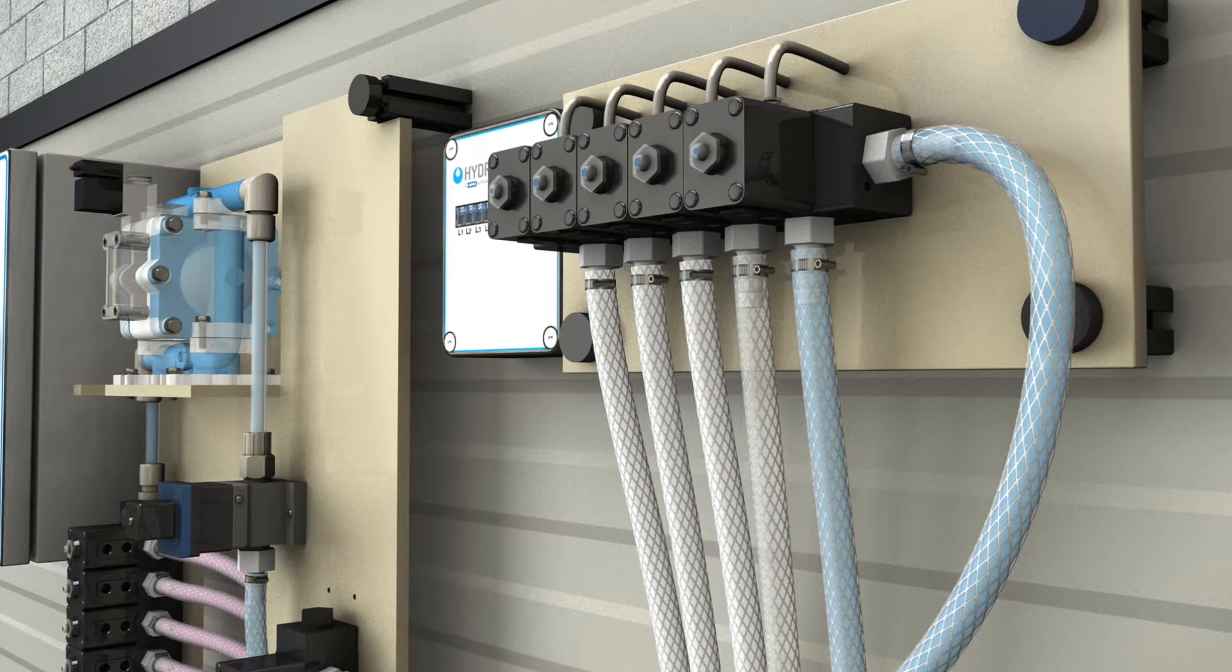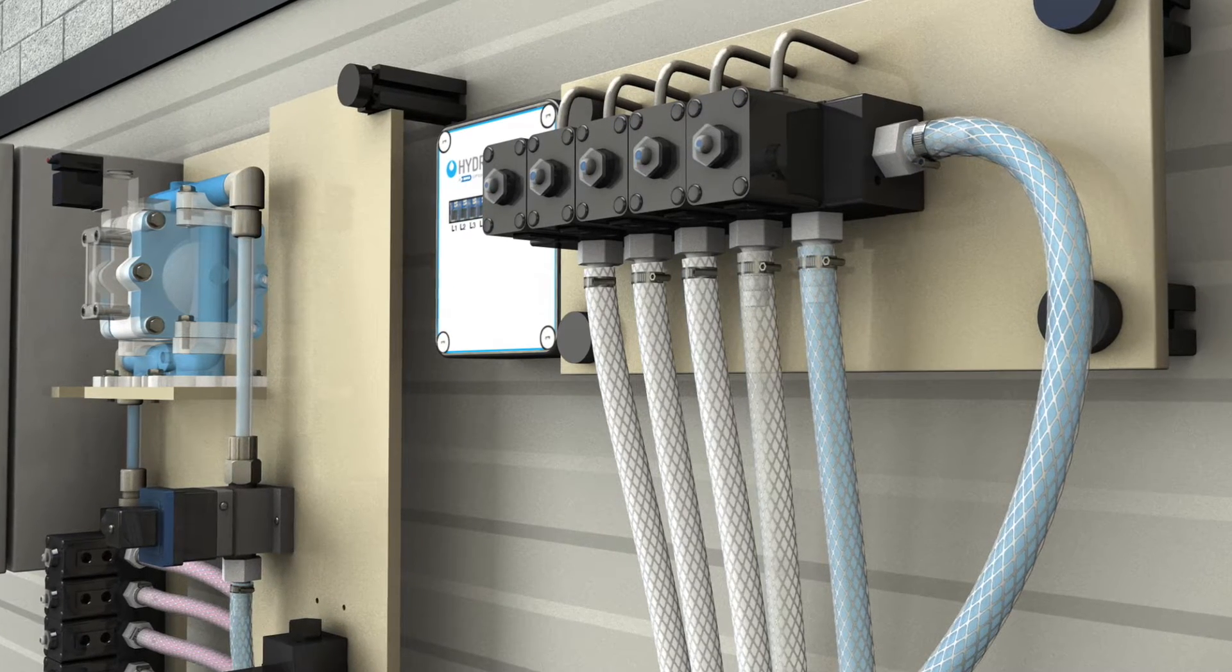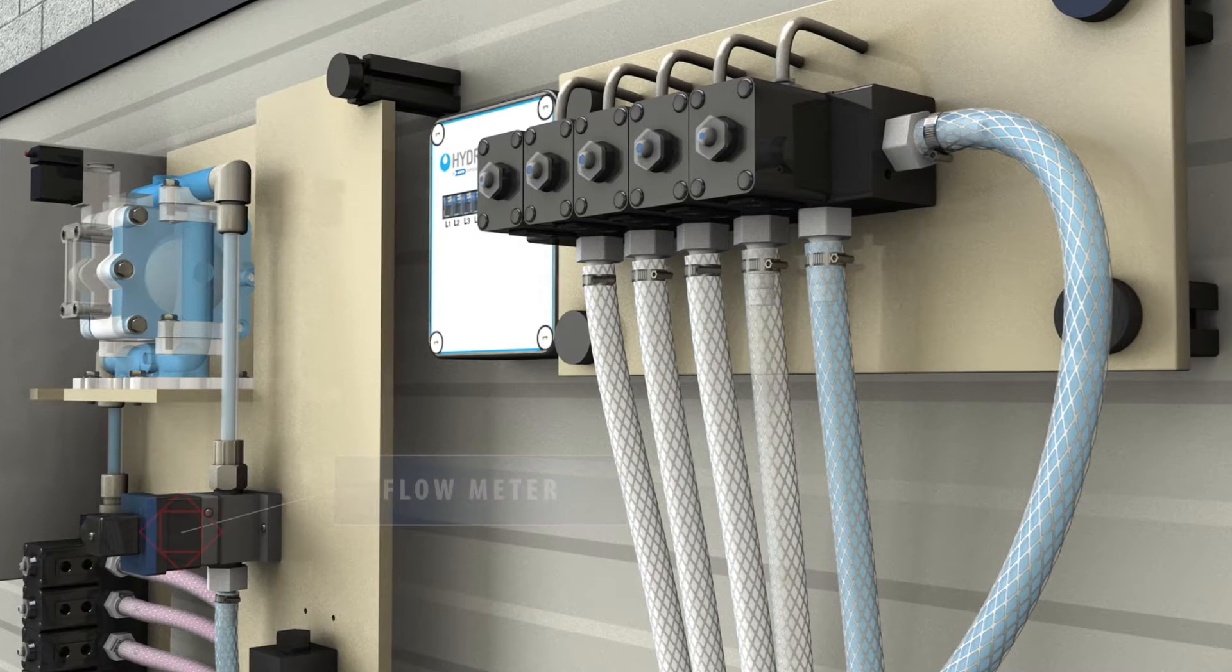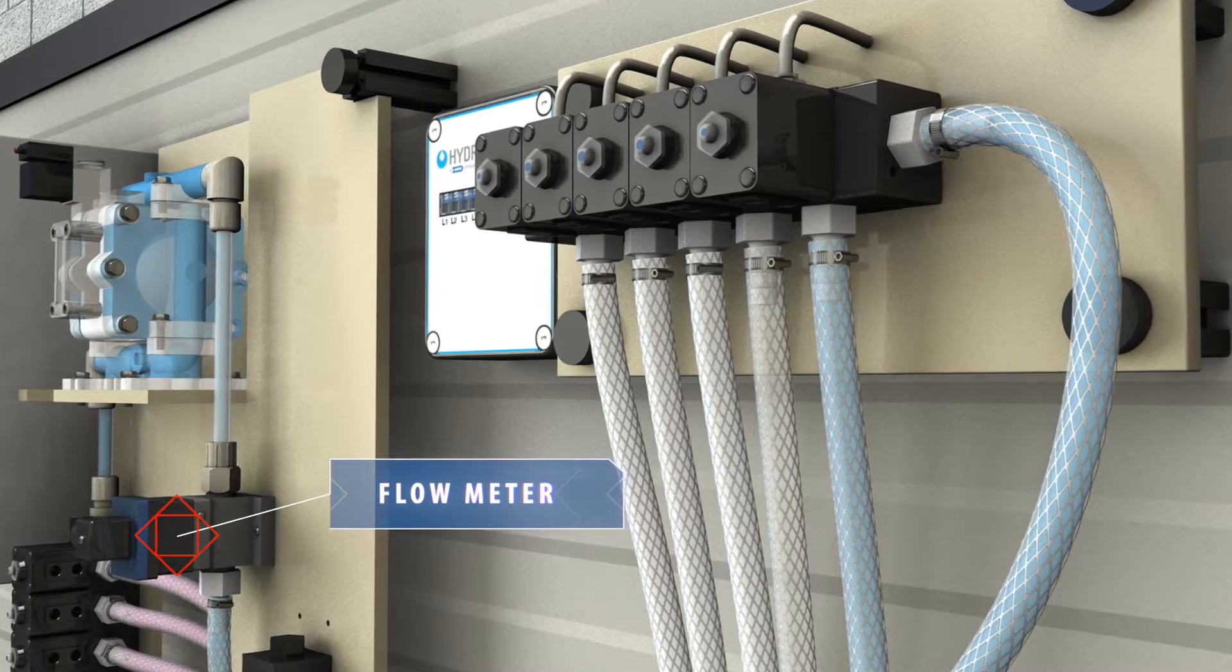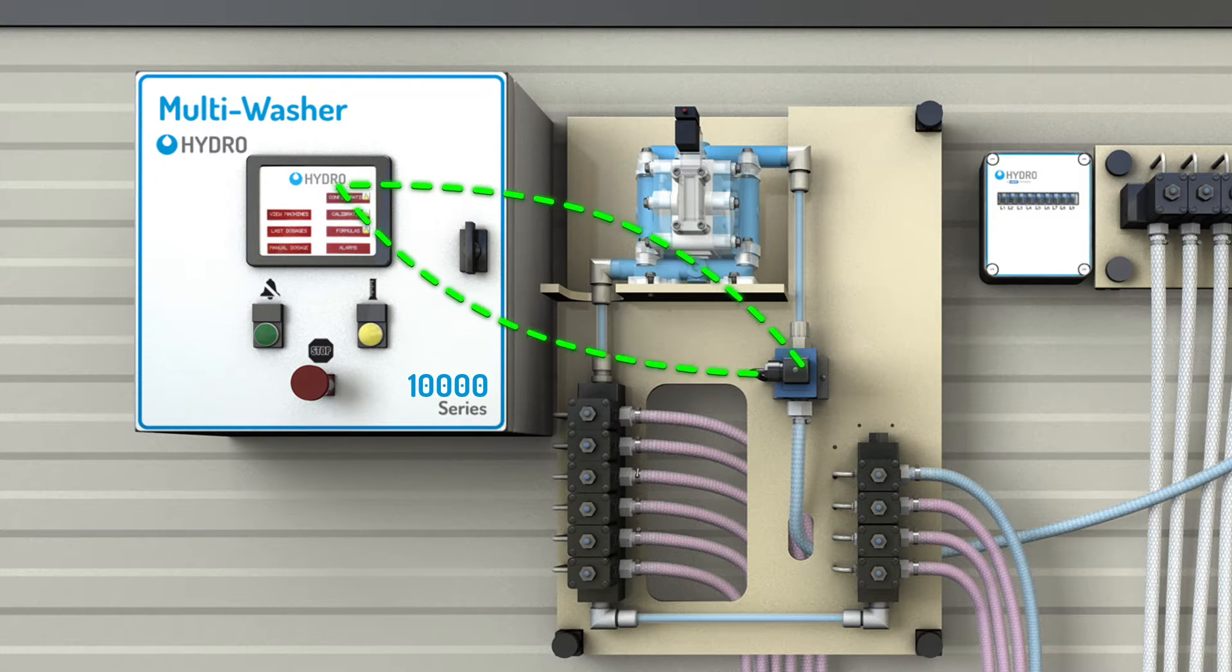The water test will verify there's sufficient water flow through the dosing channel to ensure the chemical when pumped can be flushed to the washer. As water passes through the flow meter, highly accurate pulse signals are detected by the PLC indicating the volume of water passing through the meter. If the PLC detects the correct number of pulses from the flow meter, the test is considered passed.